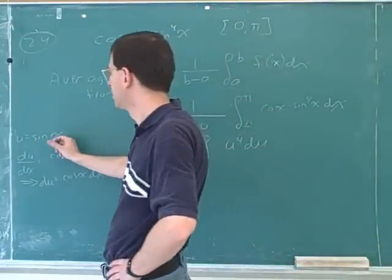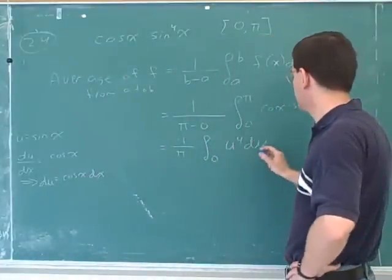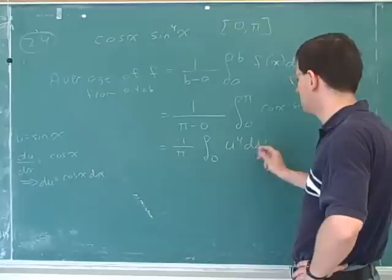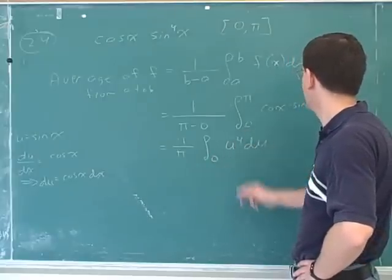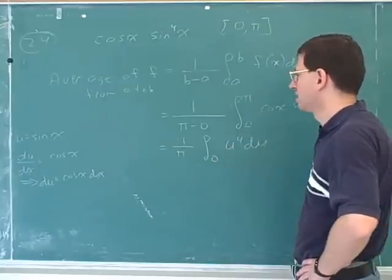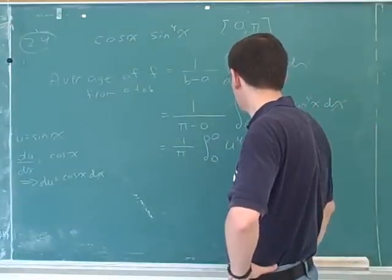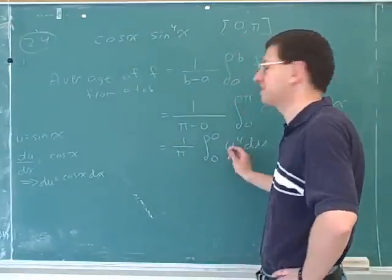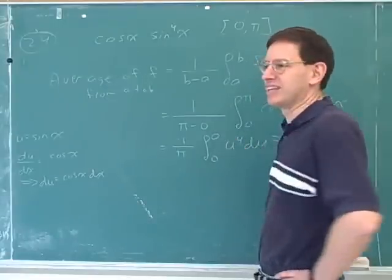If x is zero, then u is zero. Right. So these are supposed to represent x's, but when we change the variable of integration to u, these have to represent u's. But when x is zero, u would also be zero. How about when x is pi? Also zero. Huh. Yeah. So it would be zero. So actually, we don't have to do any more work. You don't even have to take this anti-derivative, because the integral of anything from zero to zero is zero.